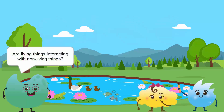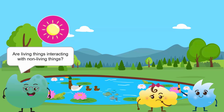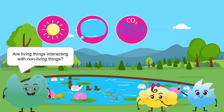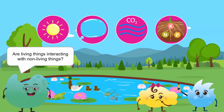Are the living things interacting with the non-living things? Yes, they are. For example, the lily plant in this pond needs sunlight, water, carbon dioxide from air, and other nutrients to make its food. Also, the fish need water to survive.